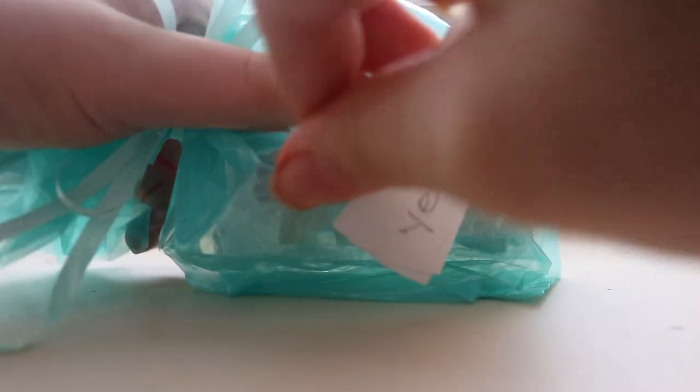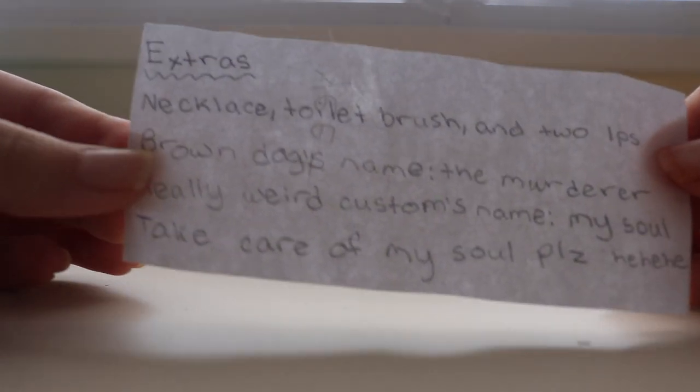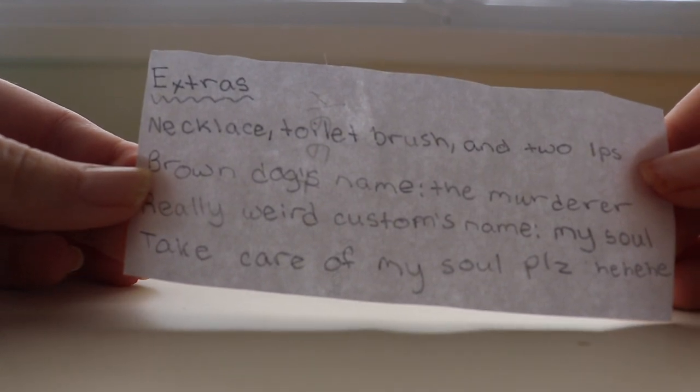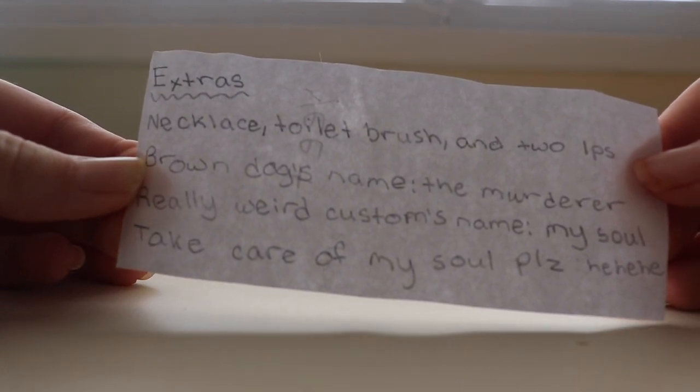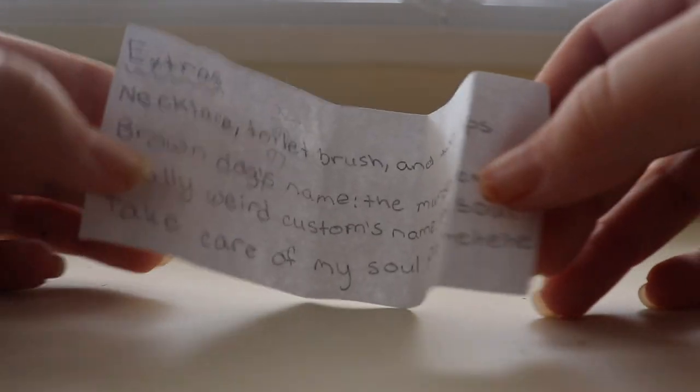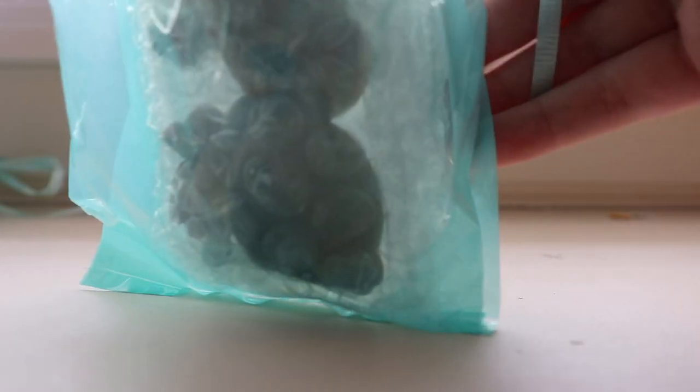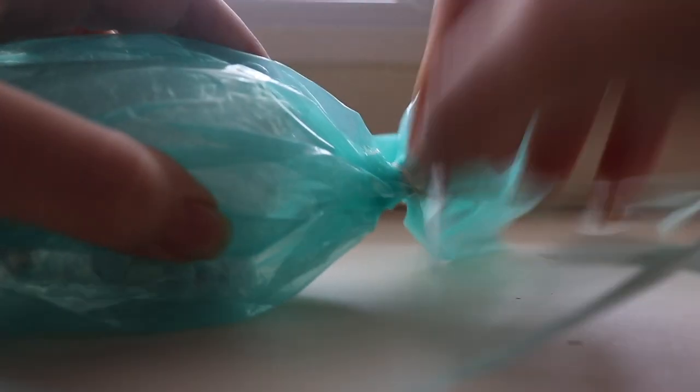Oh my gosh, sticky tape. Okay, so here's the little note, and it says that she put necklaces, a necklace, toilet brush, oh dear, into Elfie's dog's name, the murderer, and a really weird custom name, my soul. Take care of my soul, please. Oh my god. Okay, here's the bag that's labeled extras. I can never open up bags like this. Give me a couple seconds. I can't open it. Okay, so I opened it up. Yay. I'm so strong.